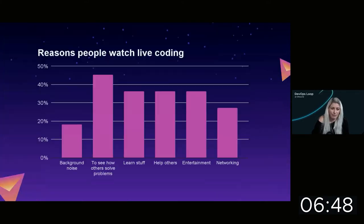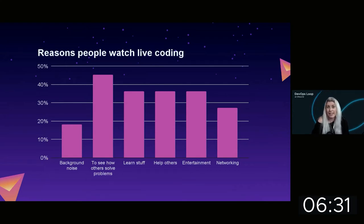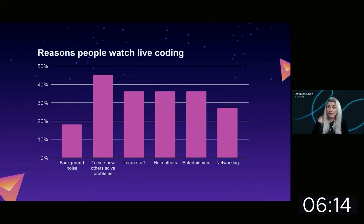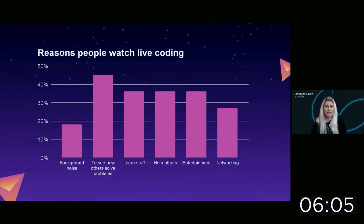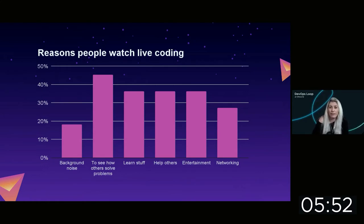I did a poll on my Twitch channel to see why people were watching me bumble around some code. Many people actually use it as radio — like talk show radio — as background noise while they're coding. If they hear something relevant they'll hop in and engage. You can see how other people solve problems, which leads to learning. You can help others. And then there's edutainment — education that's entertaining — which is key. Another big reason is networking: meeting other streamers and coders; people have even found work through streaming.